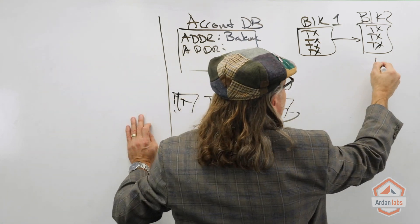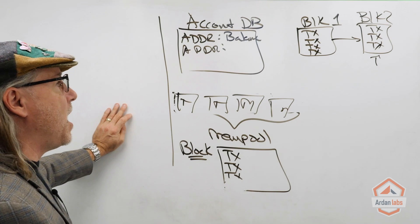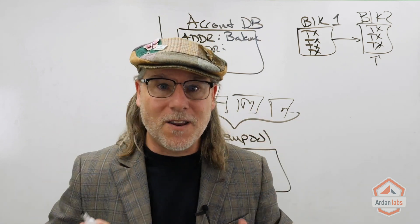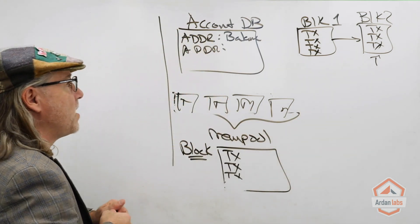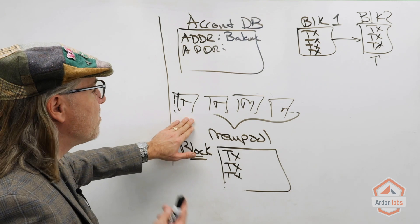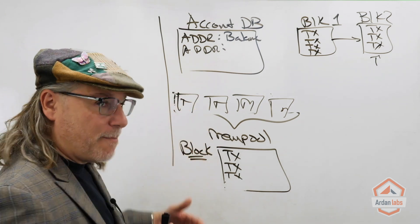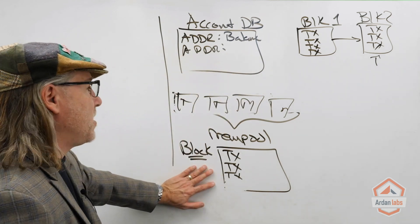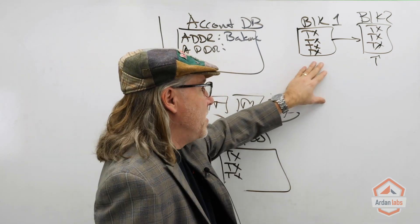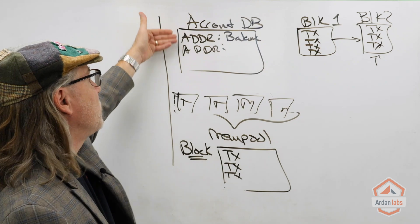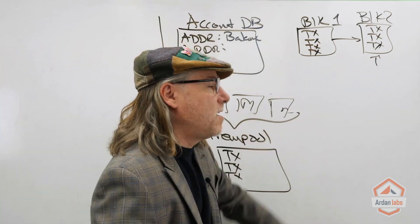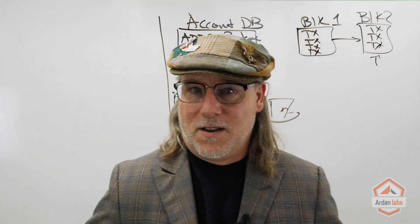We're going to be able to do this in a distributed way. The idea is that we should be able to validate that everybody's accounting database is the same on every node, based on any given block that the accounting database is up-to-date with. We're going to be able to do a lot of auditing here — it's going to be a lot of fun.